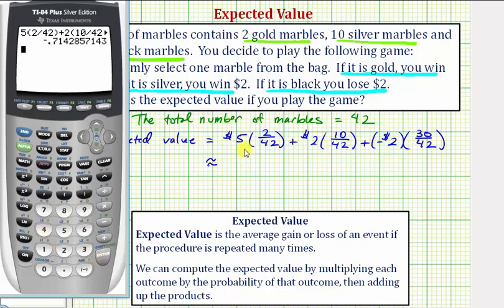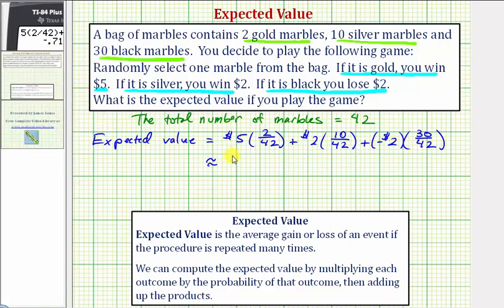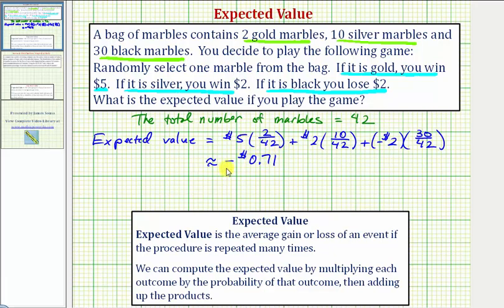Rounding to the nearest cent, we have approximately negative 71 cents, or negative 0.71 dollars. So this is our expected value, which means we can expect an average loss of 71 cents if this game is repeated many times.